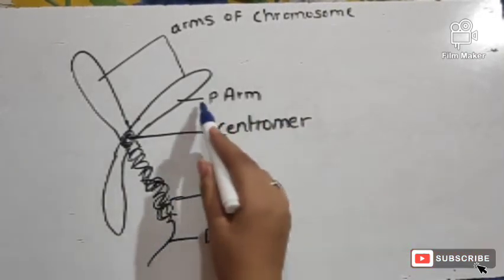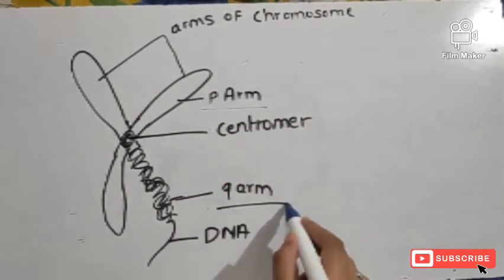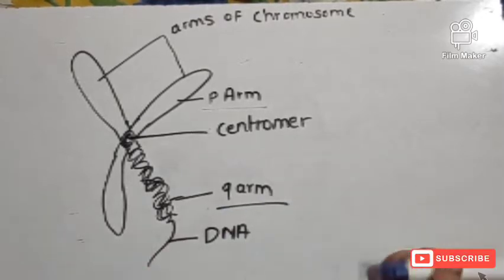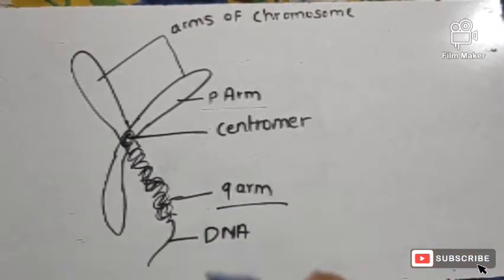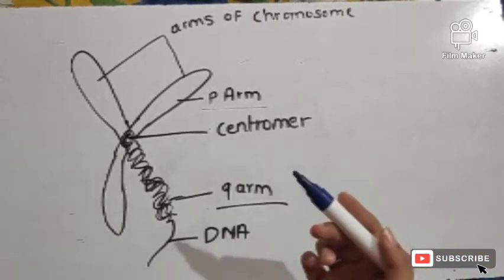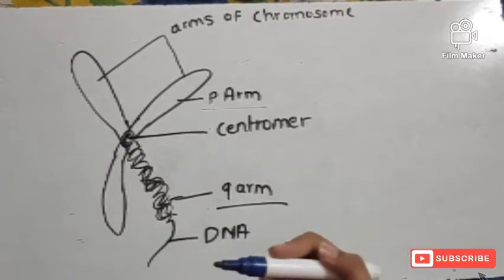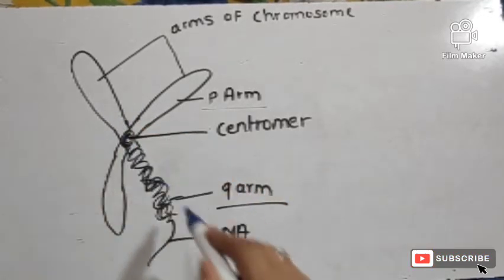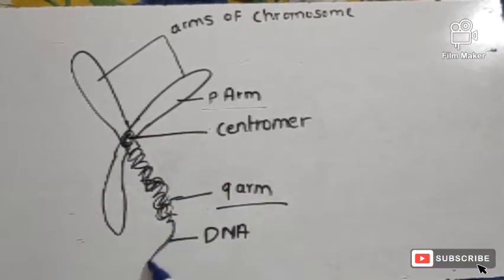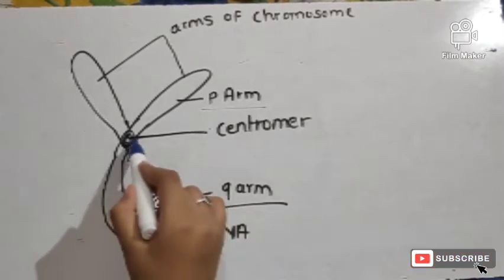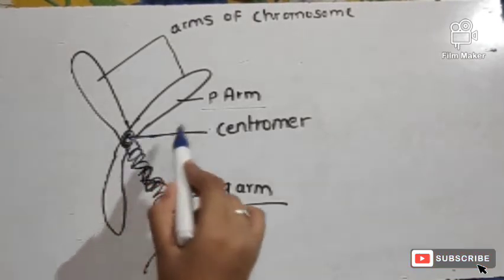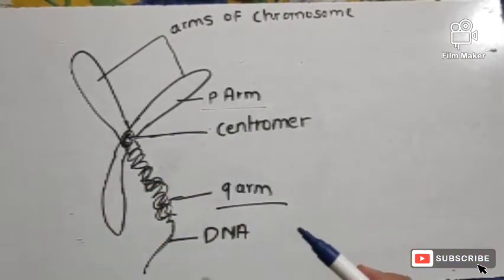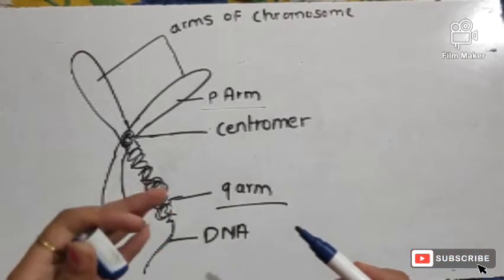The centromere is the primary constriction. The chromosome has two arms: the p arm and the q arm. The chromosome is a thread-like DNA structure. According to the position of the centromere, there are generally four types of chromosomes.